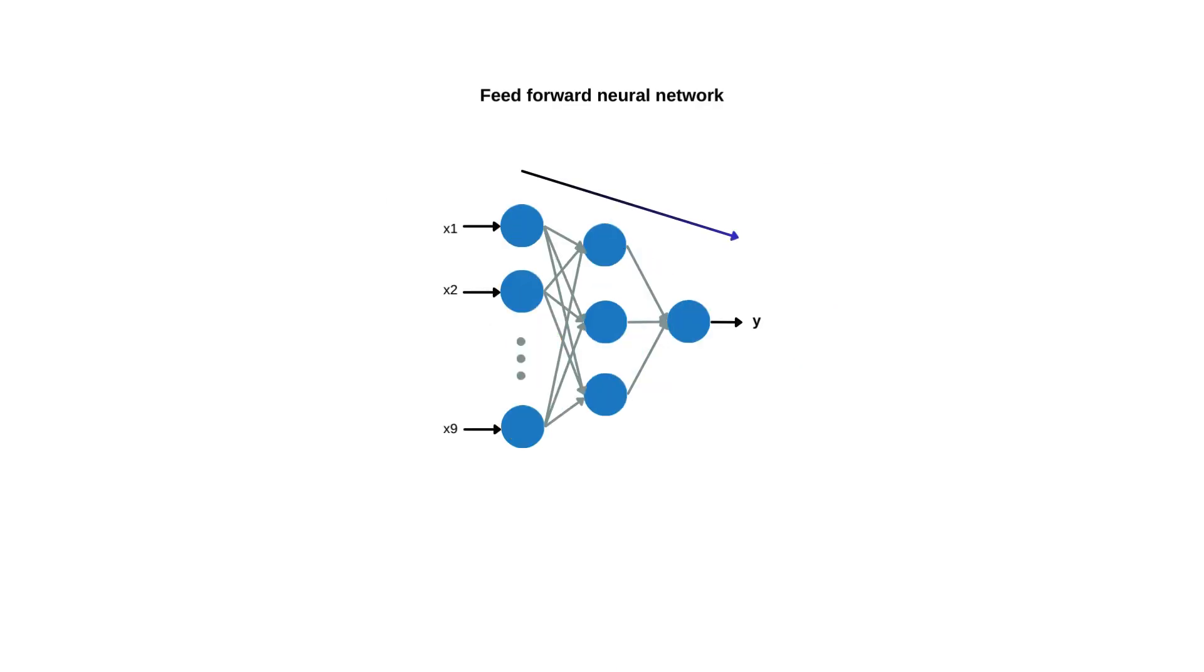Let's rewind and first see our previous neural networks. Here is a simple neural network with input layer having 9 inputs, a hidden layer and an output layer. Notice a couple of things in this neural network. Here, we define the number of inputs beforehand and this remains constant. Also, all inputs are fed to the network at the same time in the beginning.